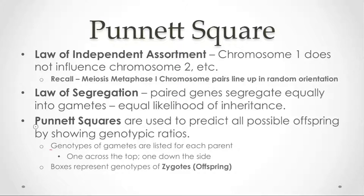Punnett squares are very useful in determining or predicting possible offspring and the ratios we expect to see. It's important when you set up the Punnett square to show all possible gametes. Gametes are the sperm and egg produced from meiosis. Gametes have genotypes just like organisms do, but meiosis cuts the genetic material in half so that when the sperm and egg fuse, you've restored the normal number of chromosomes. The gametes for parents are listed across the top of the Punnett square and then down the side, and the internal boxes represent possible offspring or zygotes from that particular cross.